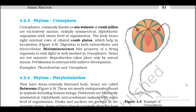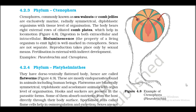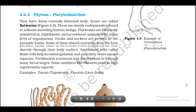4.2.3 Phylum Ctenophora. Ctenophores, commonly known as sea walnuts or comb jellies, are exclusively marine, radially symmetrical, diploblastic organisms with tissue level of organization. The body bears eight external rows of ciliated comb plates which help in locomotion (Figure 4.8). Digestion is both extracellular and intracellular. Bioluminescence — the property of a living organism to emit light — is well marked in ctenophores. Sexes are not separate. Reproduction takes place only by sexual means. Fertilization is external with indirect development. Examples: Pleurobrachia and Ctenoplana.